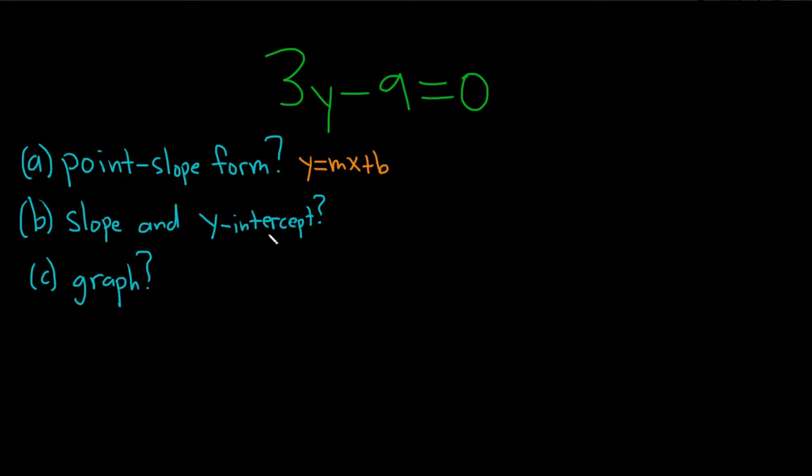Part B wants the slope and y-intercept, so m is the slope and b is the y-intercept, and part C wants the graph, so let's go ahead and go through it very carefully.